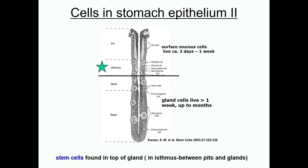This image reviews the difference between the oxyntic glands of the body and fundus and the pyloric glands, and gives some information about the different cell types. Finally, we come to the stem cells of the gastric glands. There is high turnover of gastric epithelial cells, particularly of those surface mucous cells which are constantly under damage. All the cell types are regenerated from the same stem cells. These stem cells, for all the epithelial cells that line the glands, pits, and stomach lumen, are found in a narrow segment or isthmus between each pit and gland, marked here by the green star.